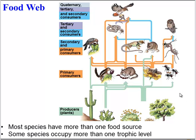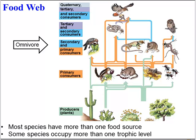Sometimes species can occupy more than one trophic level. For example, this bird is both a secondary and a primary consumer, which is known as an omnivore. An omnivore can eat plants or it can eat animals. Humans are omnivores.